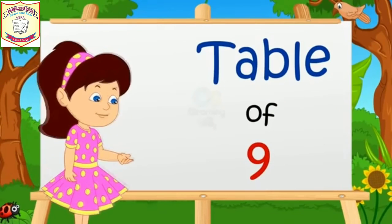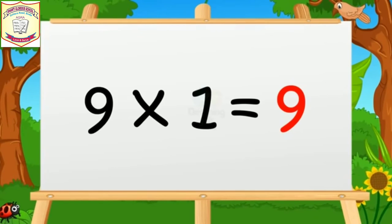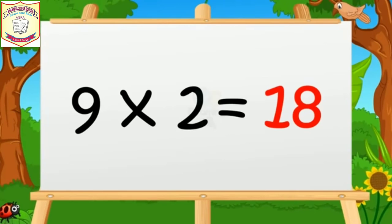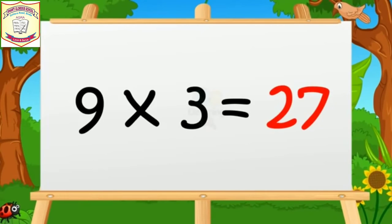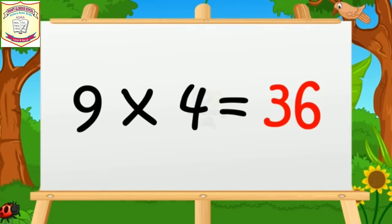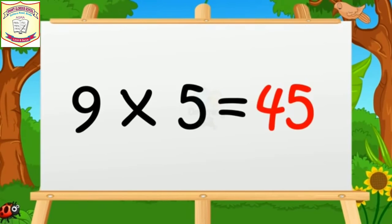Table of Nine. Nine ones are nine. Nine twos are eighteen. Nine threes are twenty-seven. Nine fours are thirty-six. Nine fives are forty-five.